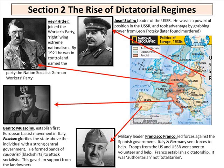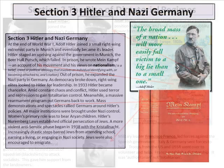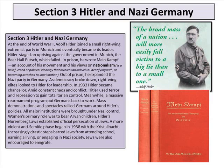Spain was essentially a practice pre-game before they actually started the next world war. Section 3 covers the rise of Hitler and Nazi Germany. Mein Kampf preached nationalism and being proud of one's nation — that everything German was good and above all else. Once out of prison, he expanded the Nazi party in Germany. As democracy broke down, right-wing elites looked to Hitler for leadership.